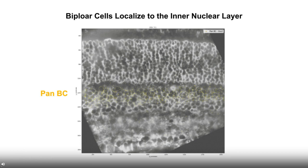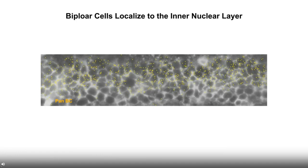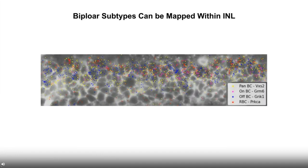Similarly, looking at bipolar cells — interneurons connecting the photoreceptor cells to the RGC layer — the bipolar cell markers highlight the top half of the inner nuclear layer. If you overlay that with subtypes of bipolar cells, like on, off, and rod bipolar cells, you can see the colored dots have a specific pattern that highlights different subtypes.